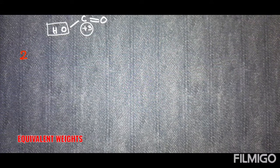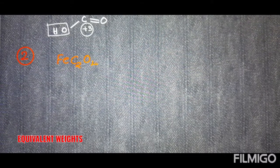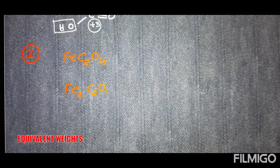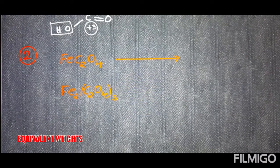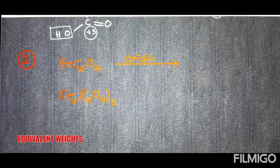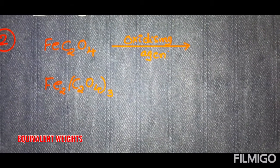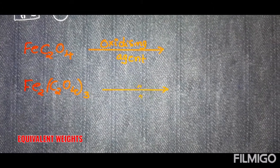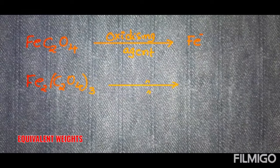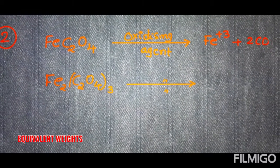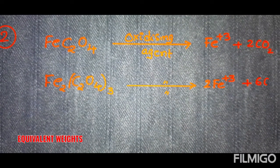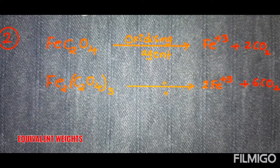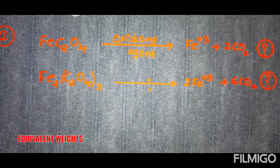Taking the second example: ferrous oxalate FeC₂O₄ and also ferric oxalate Fe₂(C₂O₄)₃. Each is treated with a suitable oxidizing agent. For ferrous oxalate the products are Fe³⁺ and two moles of CO₂; for ferric oxalate the products are two Fe³⁺ and six moles of CO₂. What is the n-factor in each case? Think for a minute.